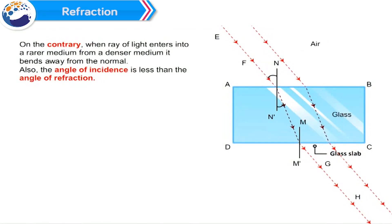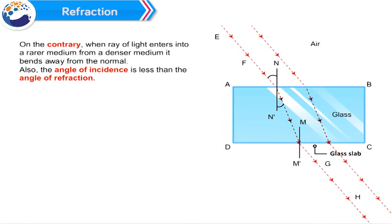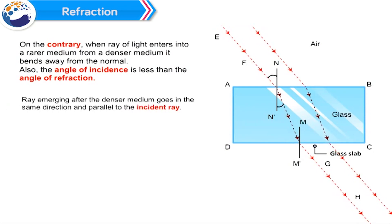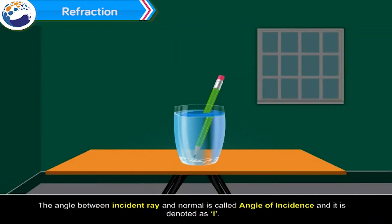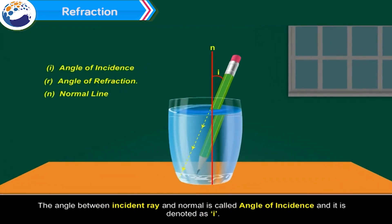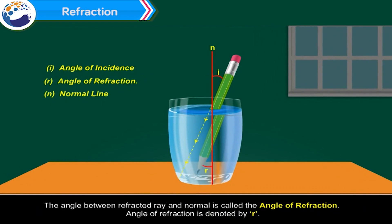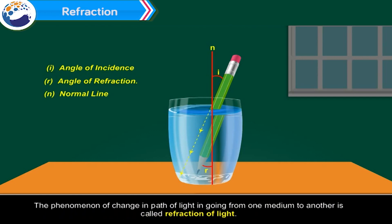On the contrary, when a ray of light enters into a rarer medium from a denser medium, it bends away from the normal, and the angle of incidence is less than the angle of refraction. The ray emerging after the denser medium goes in the same direction and parallel to the incident ray. The angle between the incident ray and the normal is called the angle of incidence, denoted as i, while the angle between the refracted ray and the normal is called the angle of refraction, denoted by r.